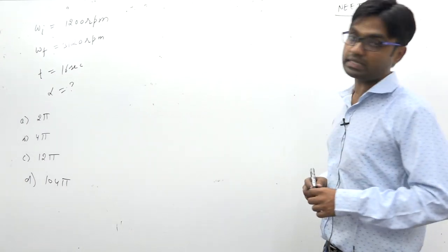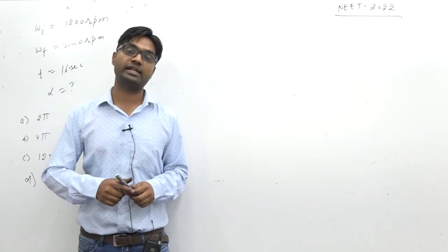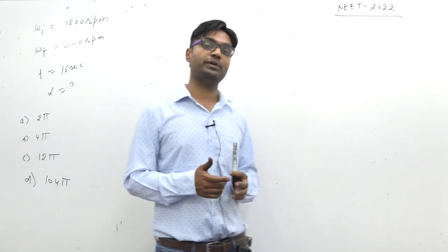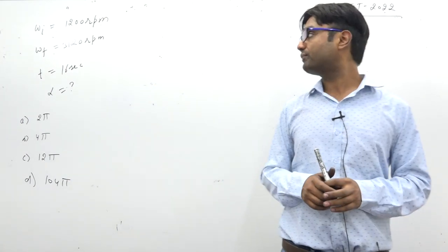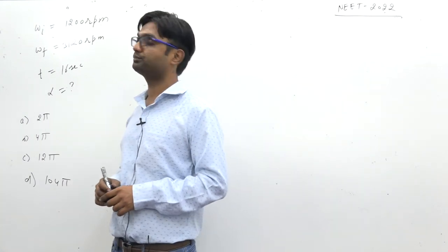Look, NEET is using 222. This is a circular motion question. In this, initial angular velocity is 1200 RPM. RPM means rotations per minute. And omega final is 320 RPM. Time is 16 seconds. You will have to find alpha. Okay, this is the question.